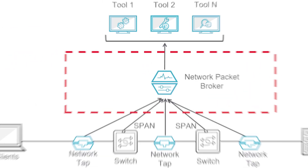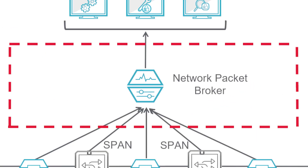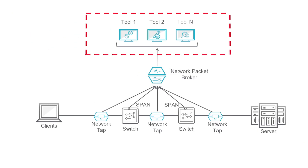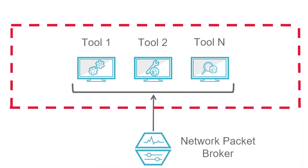By deploying it between your taps and your tools, you can reduce tool strain by sending your tools only the data they need and nothing extra. The third and final part of a visibility architecture are your tools themselves, which provide your actual data insights.